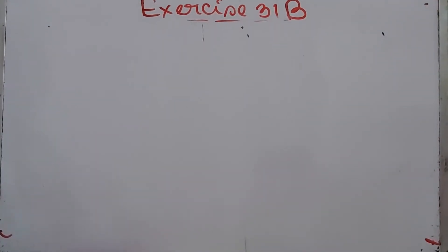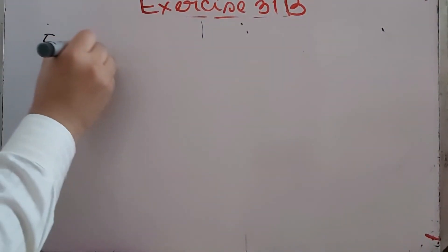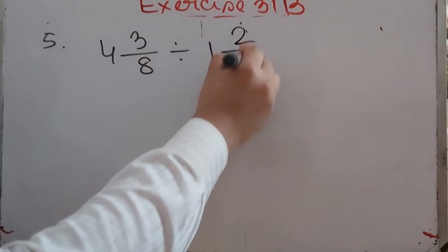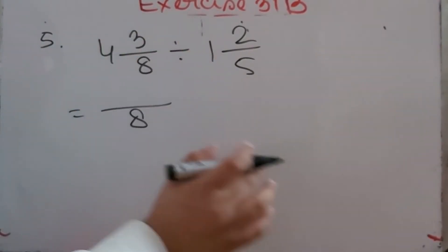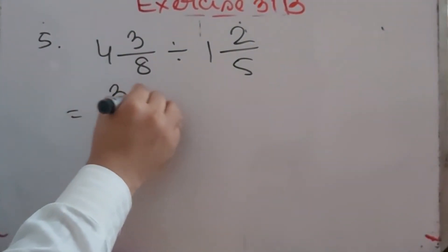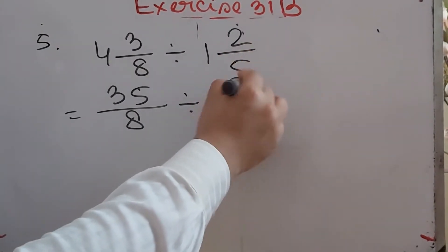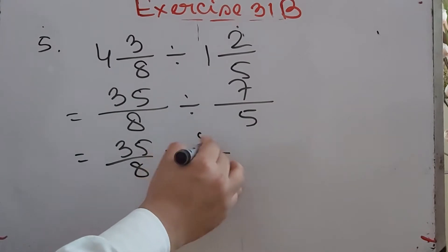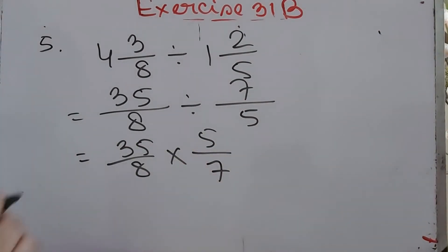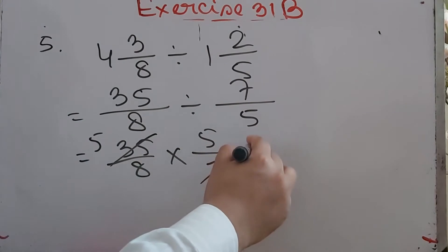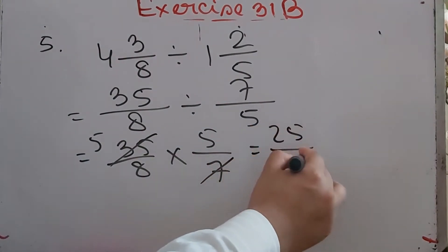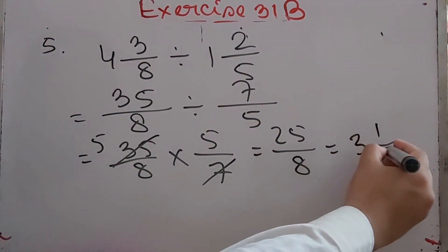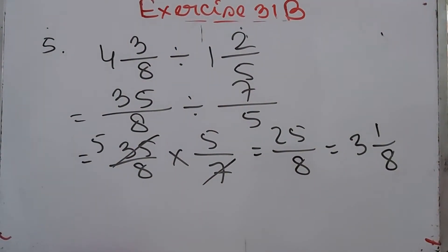Number 5: 4 whole 3/8 divided by 1 whole 2/5. Convert: 8×4 = 32 plus 3 = 35/8, and 5×1 = 5 plus 2 = 7/5. Multiply 35/8 by 5/7: 35 divided by 7 = 5, so 5×5 = 25/8, which equals 3 whole 1/8.